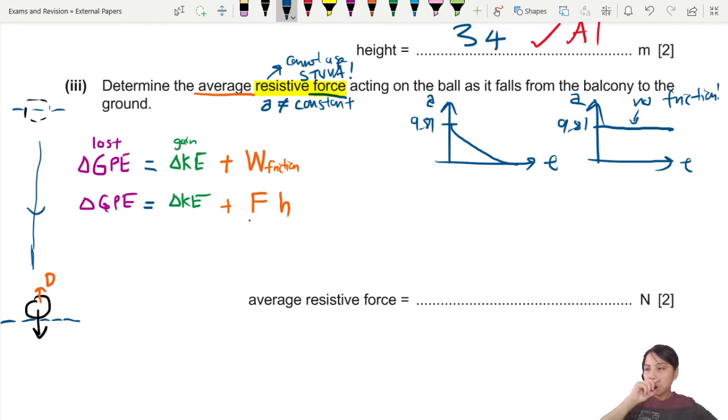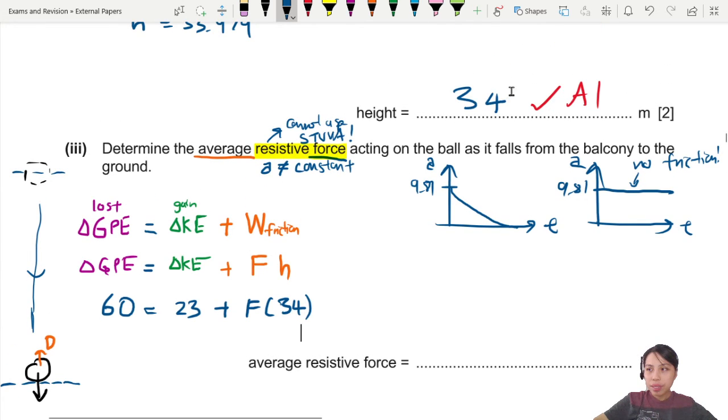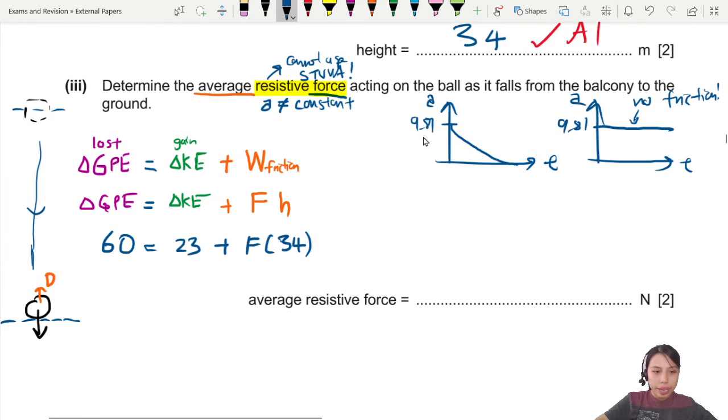We are ready to sub in all the values that we know. Firstly, GPE is given to us decreased by 60. KE increased by 23. But at some point, you reach terminal velocity. Then all the other energy becomes work done against friction. So this one is force times 34. 34 is the height previously used. You should get a value of about 1.0882. Depending on how much decimal you plug in, it should be about 1.1 when you round it off. So here, one final mark. You sub in the correct energy conservation equation. That's another mark.